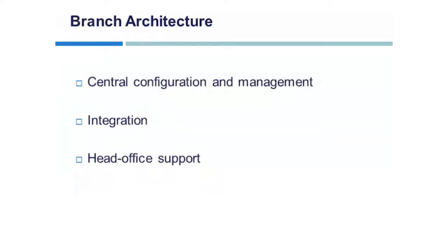Branch architecture: enterprises can centrally configure, monitor, and manage devices located at remote sites. It integrates security, switching, network analysis, caching, and converged voice and video services into a series of integrated services routers in the branch. It also provides head office applications and services such as security, Cisco IP communications, and advanced application performance.